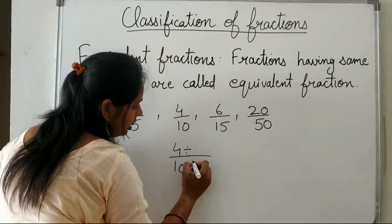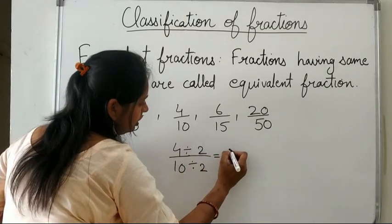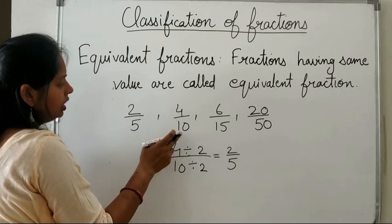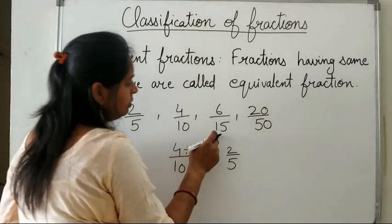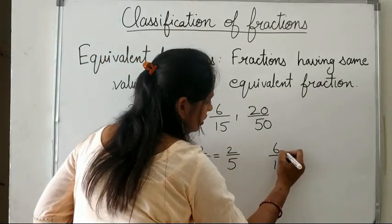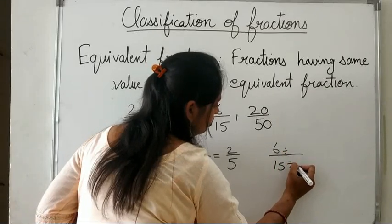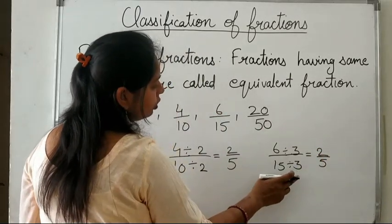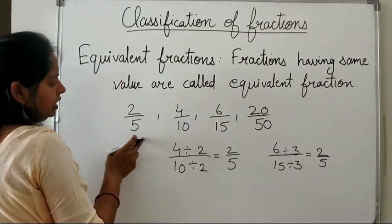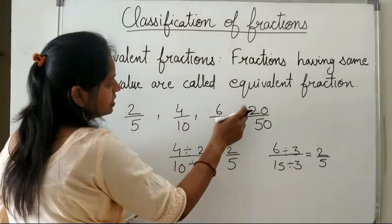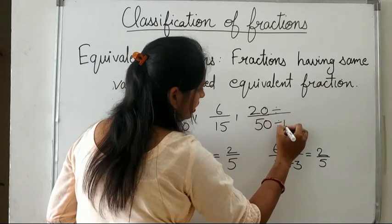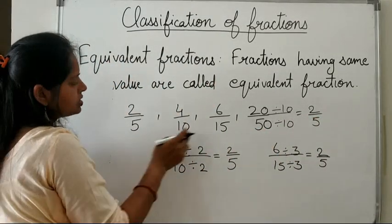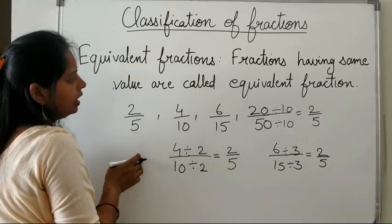If we divide the numerator and denominator of 4 upon 10 by 2, we get 2 upon 5. So 4 upon 10 reduces to 2 upon 5 in its lowest term. Similarly, 6 upon 15 divided by 3 gives 2 upon 5. And 20 upon 50 divided by 10 also gives 2 upon 5. Since all fractions reduce to 2 upon 5 in their lowest term, they are all equivalent fractions.